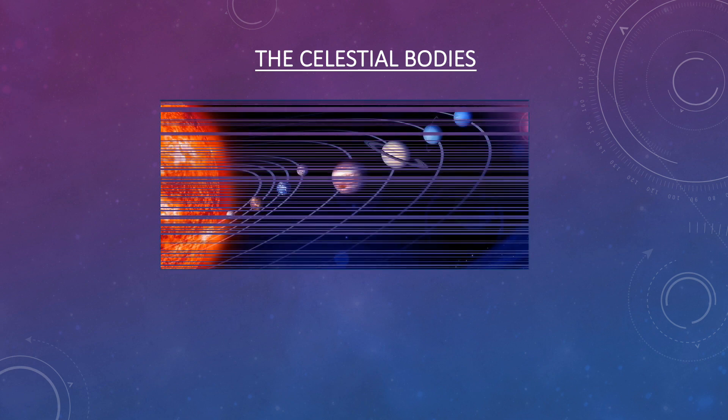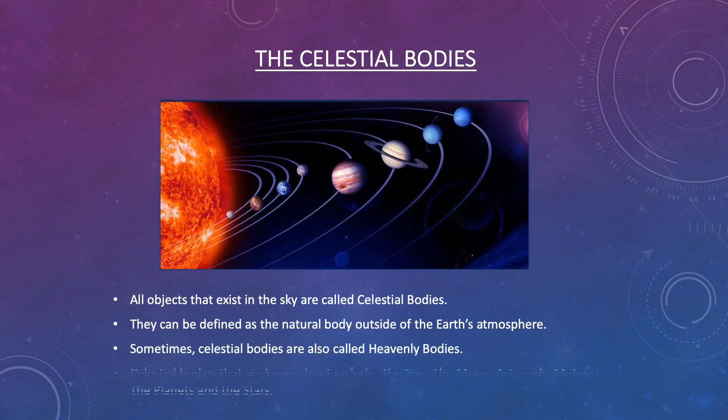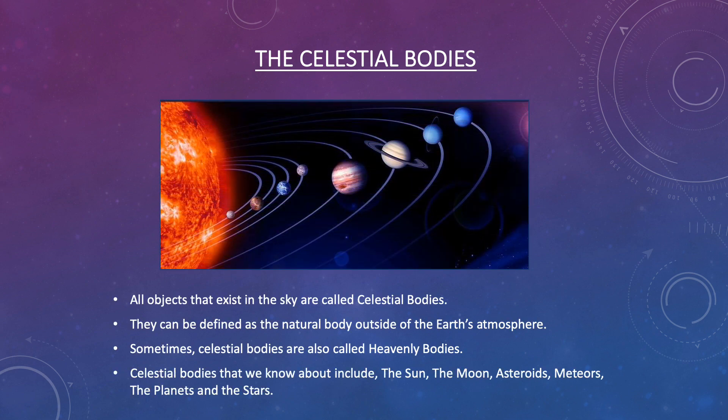Now it's time to talk about celestial bodies. All objects that exist in the sky are called celestial bodies. They can be defined as natural bodies outside of the Earth's atmosphere. Sometimes celestial bodies are also called heavenly bodies. Celestial bodies that we know about include the Sun, the Moon, asteroids, meteors, the planets and the stars.